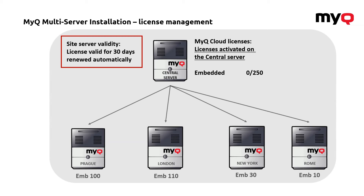There's one really important piece of information, and that's what you can see in the top left corner of the screen: each license that has been allocated to a particular site is valid only for 30 days. It's automatically renewed every time the site connects to the central server. This means that if the site were working on its own without a connection to the central server, the license would automatically expire after 30 days — something like a safety precaution.